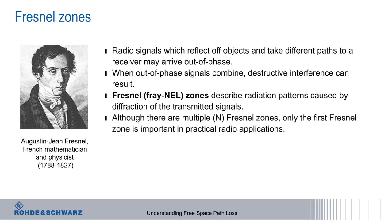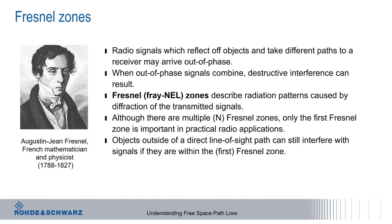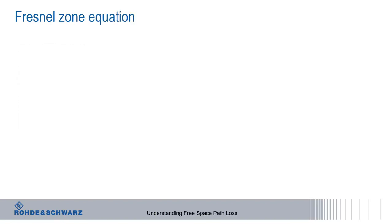Although Fresnel defined multiple zones, it's really only the first Fresnel zone that we need to consider in practical radio applications. It is however important to keep in mind that objects outside of a direct line-of-sight path can still cause interference if they lie within the first Fresnel zone. How do we define the boundaries of this first Fresnel zone?